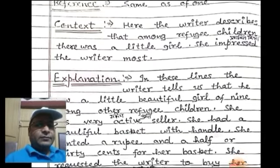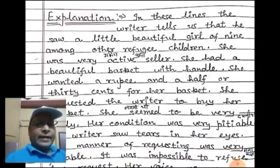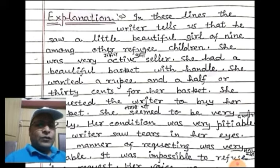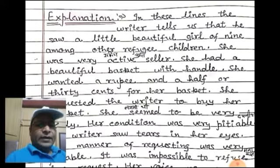Explanation (व्याख्या): In these lines, the writer tells us that he saw a little beautiful girl of nine years among other refugee children. इन पंक्तियों में लेखक हमें बताता है कि उसने नौ वर्ष की एक छोटी सुंदर लड़की दूसरे शरणार्थी बच्चों के बीच देखी। She was a very active seller.